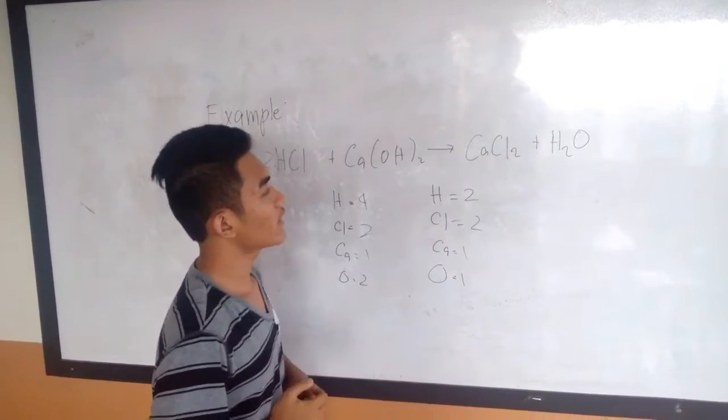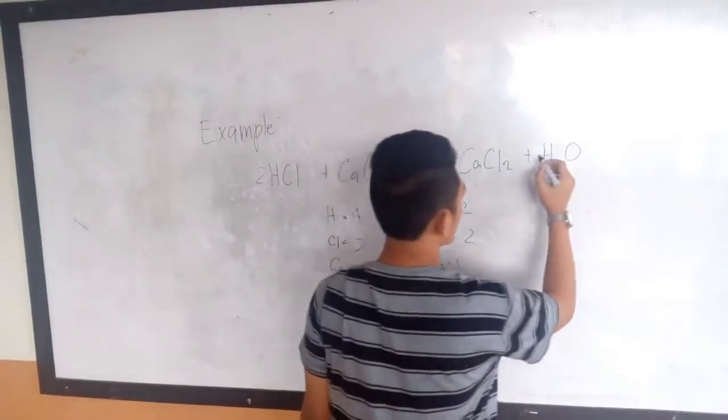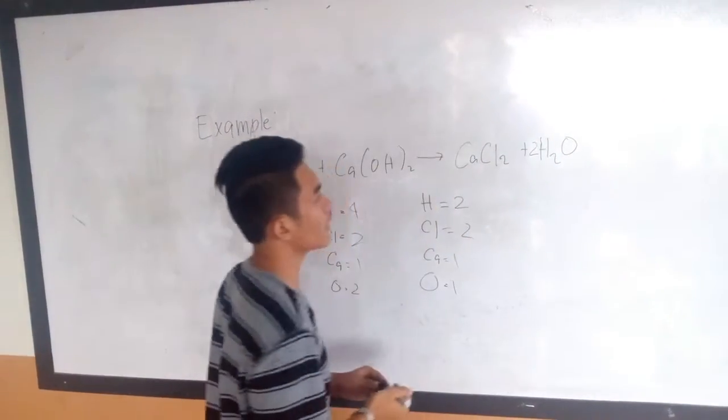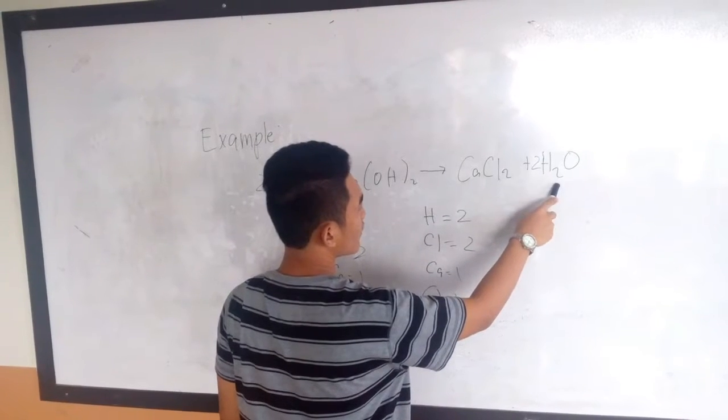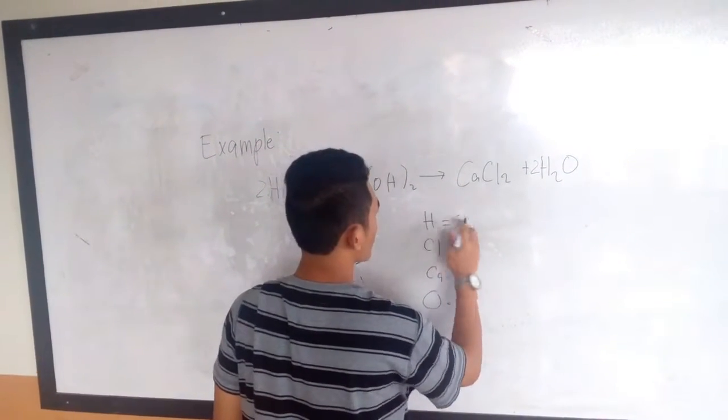So that's 2. To make this equation balance, you must put 2 here because 2 times 2 equals 4. Then it becomes 4.